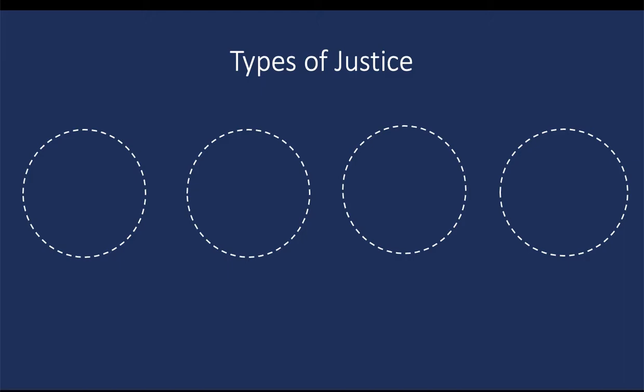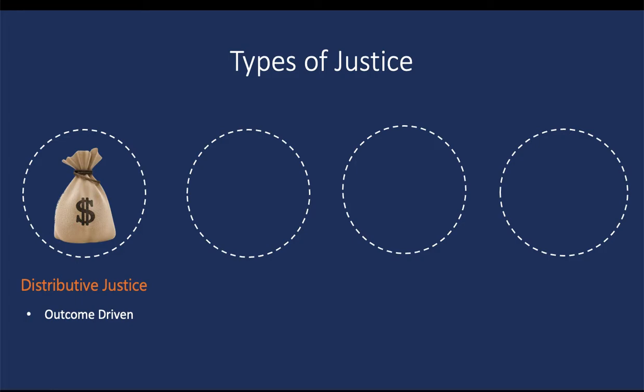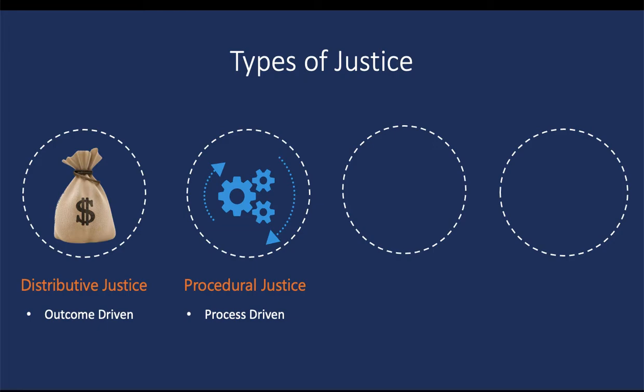There are four types of justice that a manager or authority figure can enact. The first is called distributive justice, which deals with outcomes — how are outcomes divided and are they done in a way that is perceived as fair? The second type is called procedural justice, and this is driven by the process. Rather than looking at outcomes, we look at how a decision was made and whether the steps or processes involved are perceived as fair.